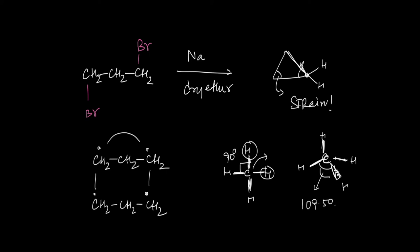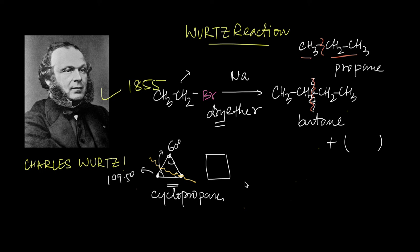So right now, the most important use of Wurtz's reaction is making this kind of strained cyclic molecule. And yes, we do still use Wurtz's reaction today for cycloalkanes — in fact, someone was seen making cyclopropane on YouTube just the other day and it was fun to watch. So that brings us to the end of this video.